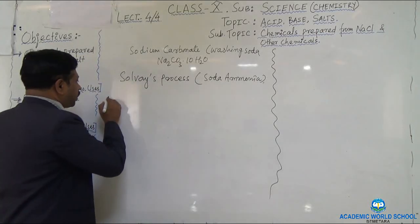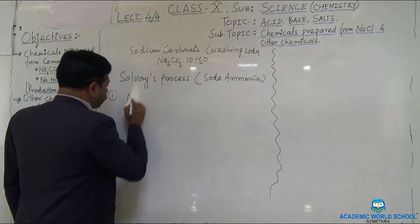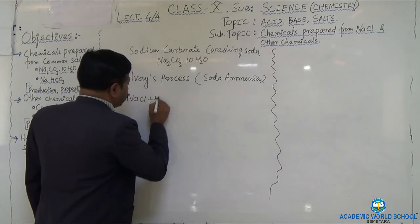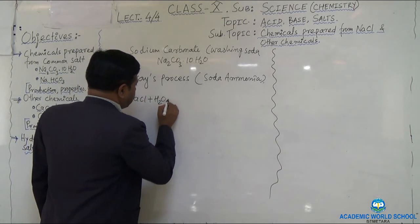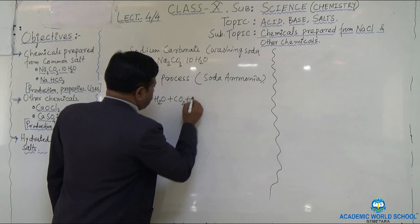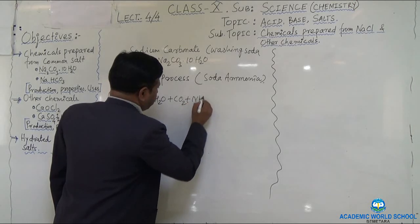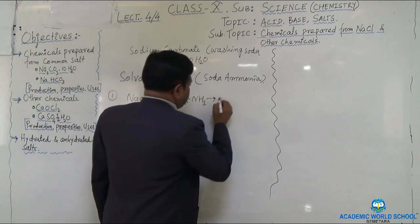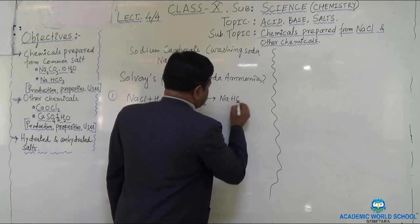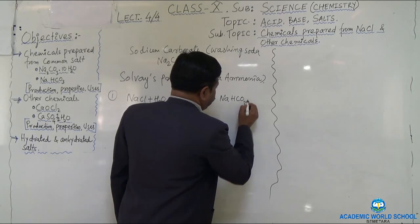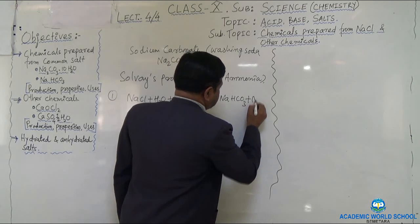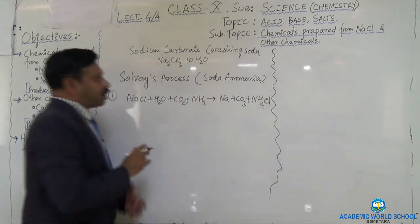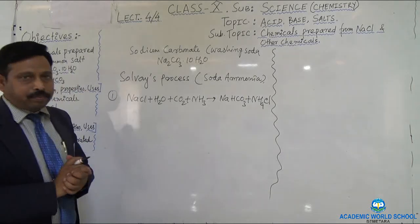The first step: NaCl + H₂O + CO₂ + NH₃ → NaHCO₃ (sodium bicarbonate) + NH₄Cl (ammonium chloride). This is the first step.